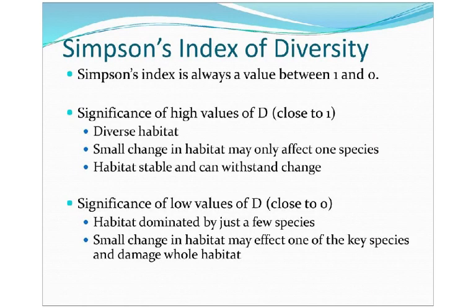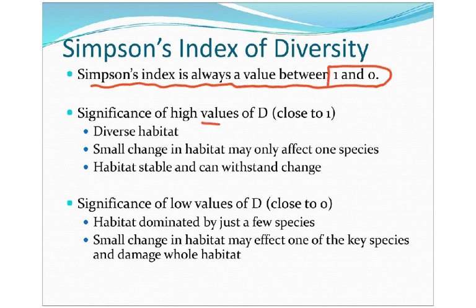Revising Simpson's index: a value close to 1 indicates a diverse habitat where a small change may only affect one species and the habitat is stable and can withstand change. A value close to 0 means the habitat is dominated by just a few species, and small changes may affect a key species and damage the whole habitat.